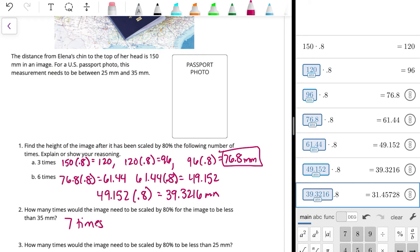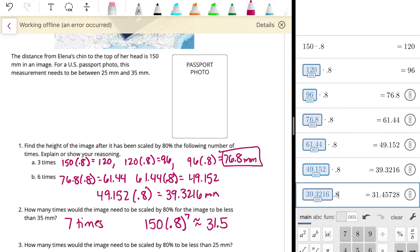All right. So we can find that it would be seven times using an exponential function or a geometric sequence. So if you look at our starting amount, which was 150, and we are multiplying by 80% or 0.8 every time. And then we can look at, if we raise that to the seventh power, we got about 31.5. And that fits within the 25 to 35 millimeters.